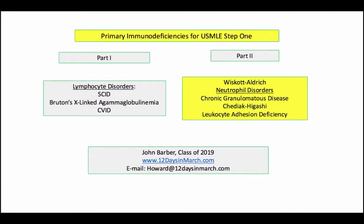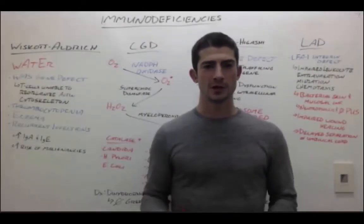Welcome back to this special edition of 12 Days in March. In this two-part video, John Barber takes a categorical approach to the primary immunodeficiencies. In this section, we will review disorders of the cytoskeleton and phagocytic cells. In this video, we see disorders identified by eponyms. I don't do well with eponyms and memorization — I need to understand the underlying pathogenesis to manage these conditions. My commentary in this section is definitely expanded to facilitate my understanding of the diseases. Hi, welcome back. My name is John Barber.